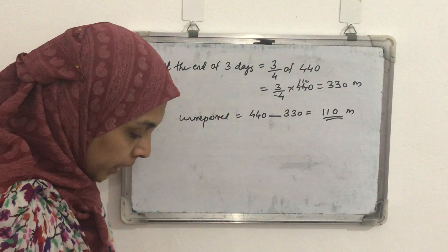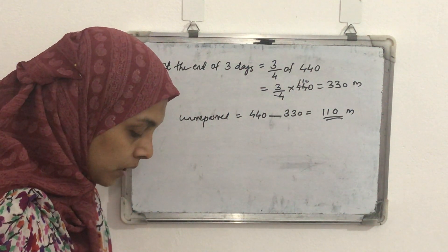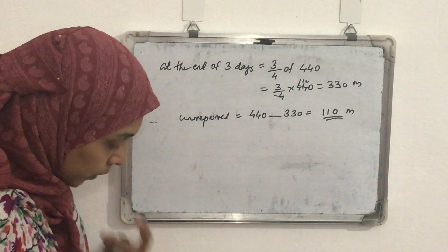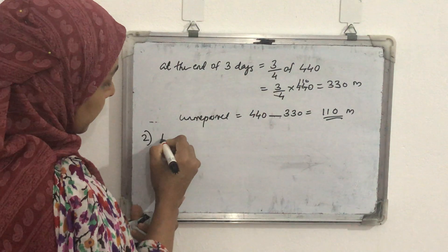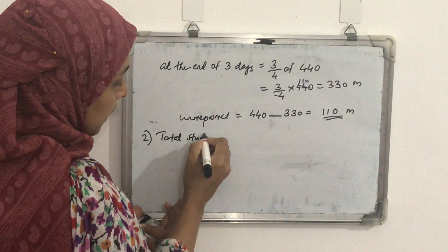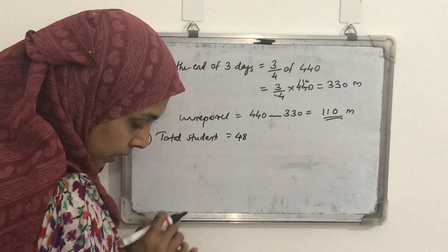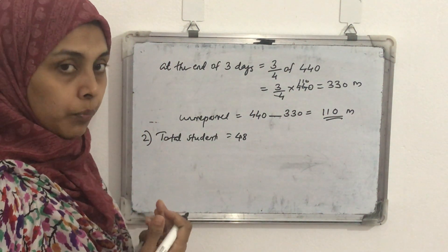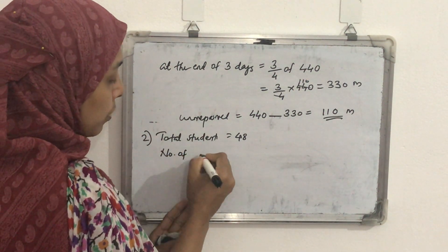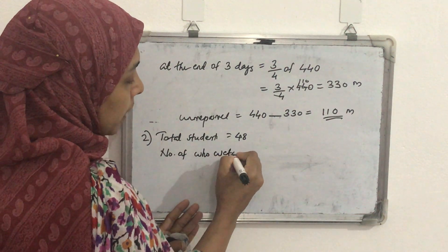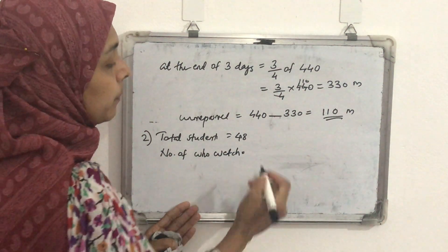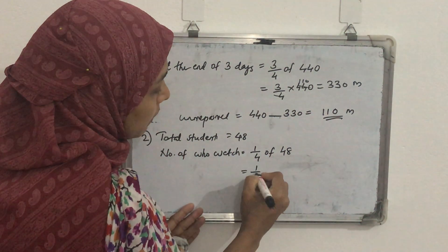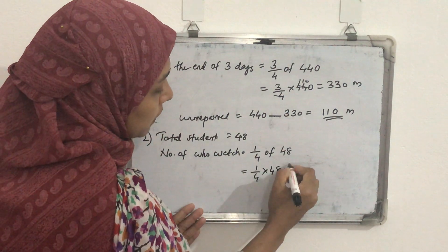Second question: In a class of 48 students, 1/4 of them regularly watch a particular TV program. How many students do not regularly watch the program? Total students is 48. The number of students who watch the program equals 1/4 of 48, which is 1/4 × 48 = 12 students.